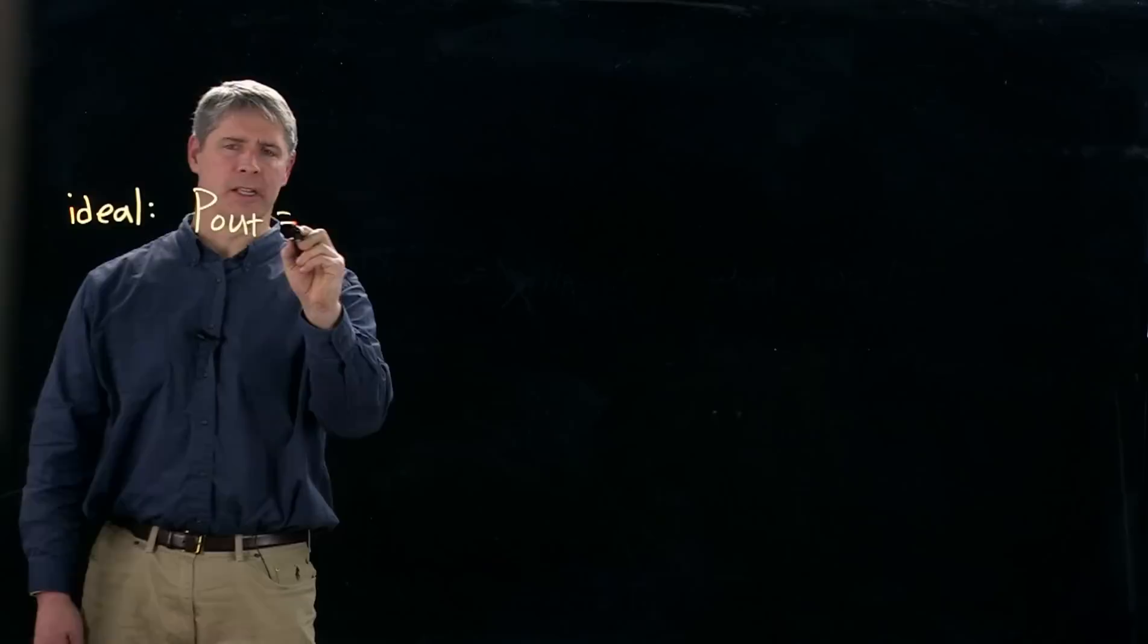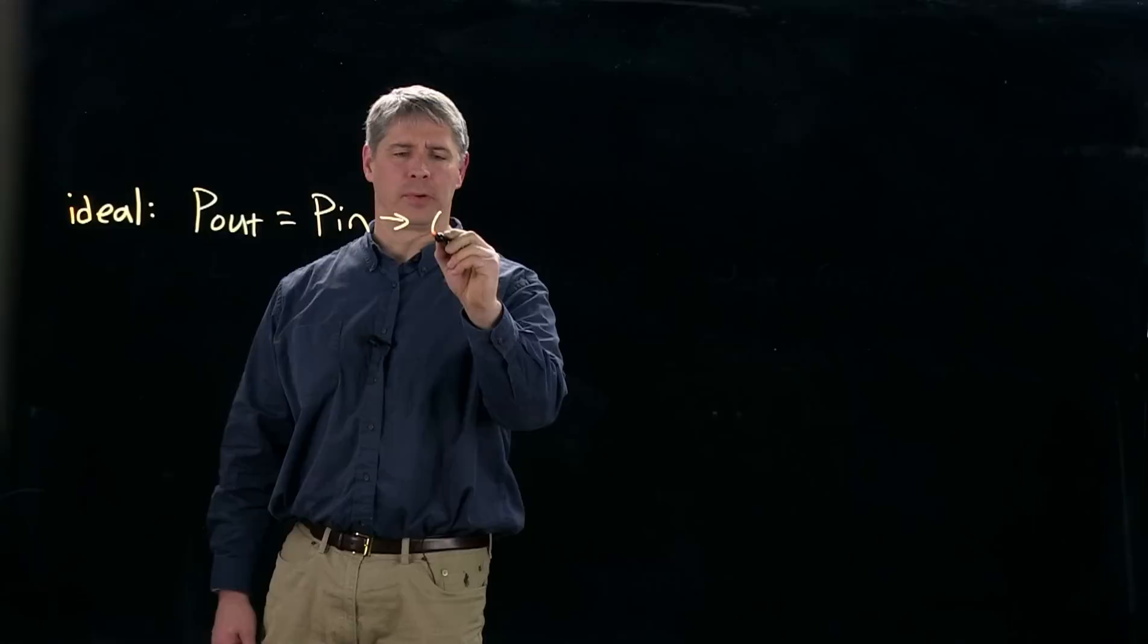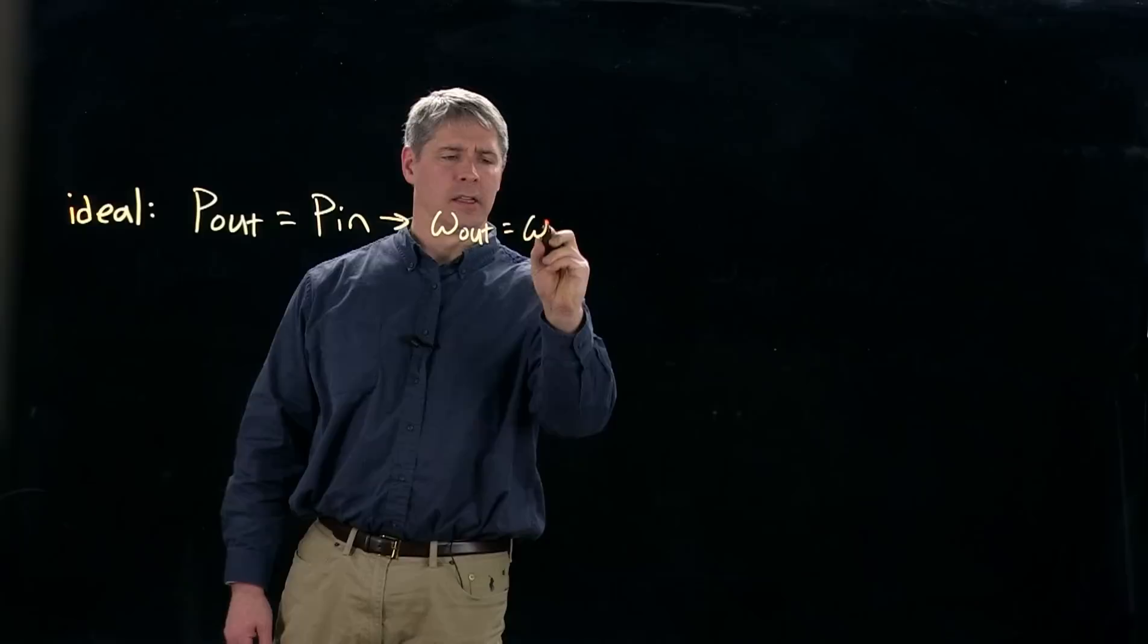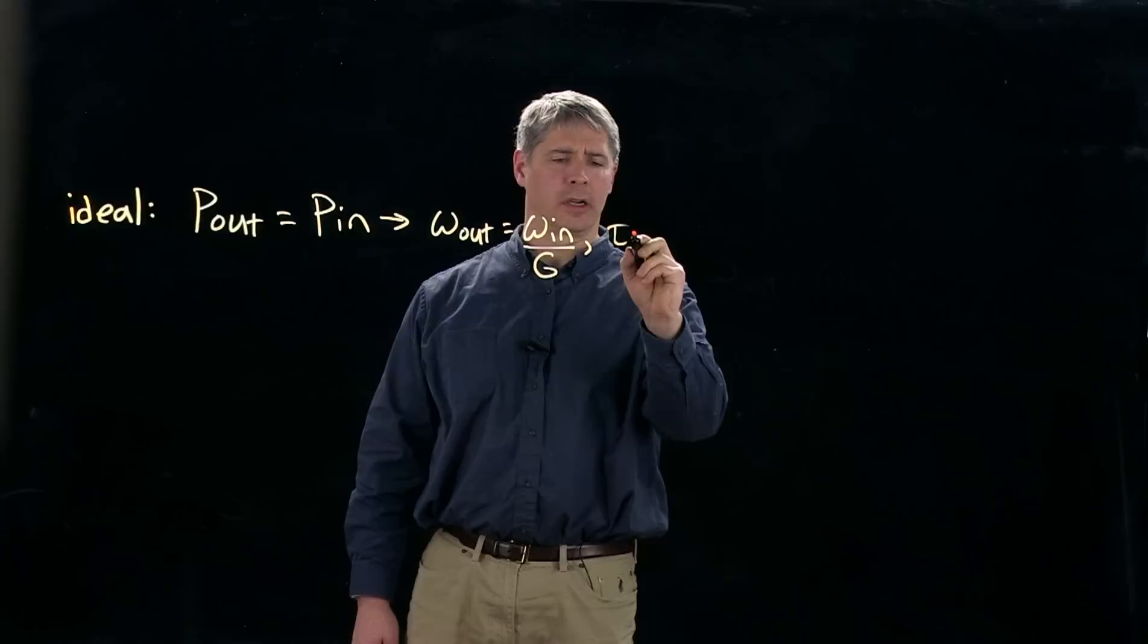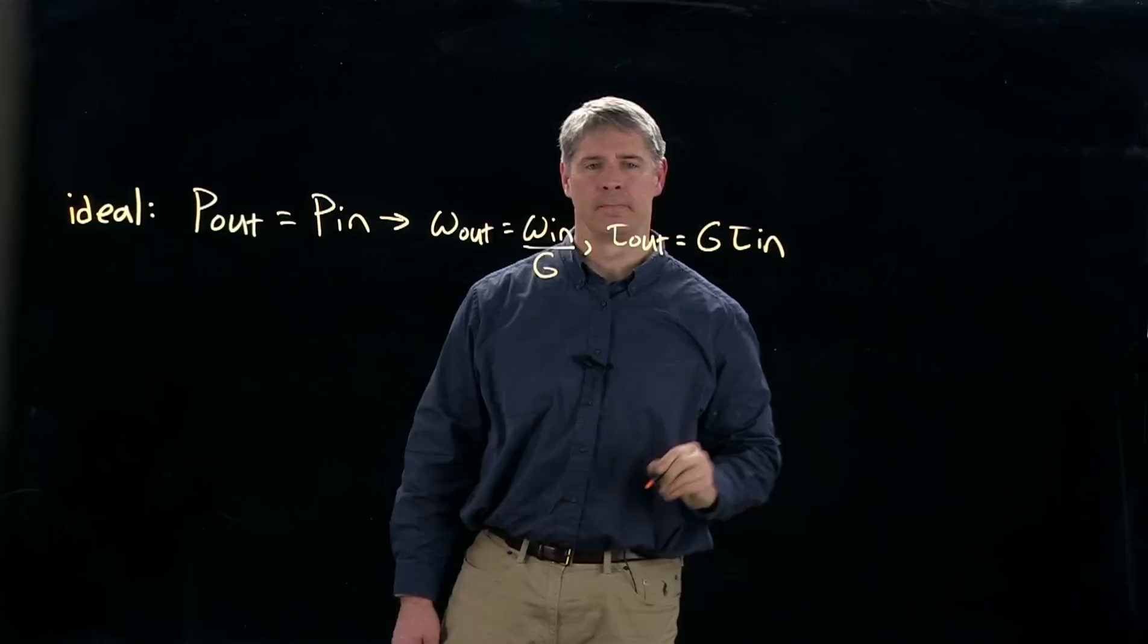An ideal gear head satisfies the relation that the power coming out of the gear head is equal to the power that we put in from the motor. This implies that the output velocity is equal to the input velocity divided by the gear ratio, and the output torque is equal to the input torque multiplied by the gear ratio.